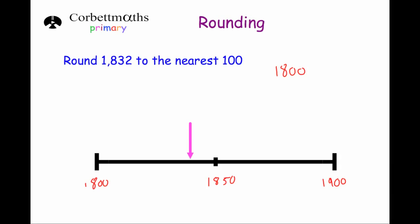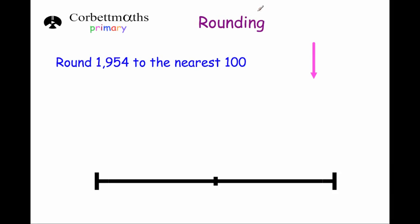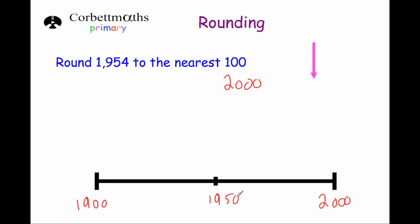Our last question asks us to round 1,954 to the nearest hundred. Without the number line, looking at the numbers: 1,954 is between 1,900 and 2,000, with 1,950 in the middle. Since 1,954 is above 1,950, it's closer to 2,000 than to 1,900 — so the answer is 2,000. Confirming on the number line: 1,900 is the multiple below, 2,000 is the multiple above, 1,950 is the midpoint, and our number sits closer to 2,000.